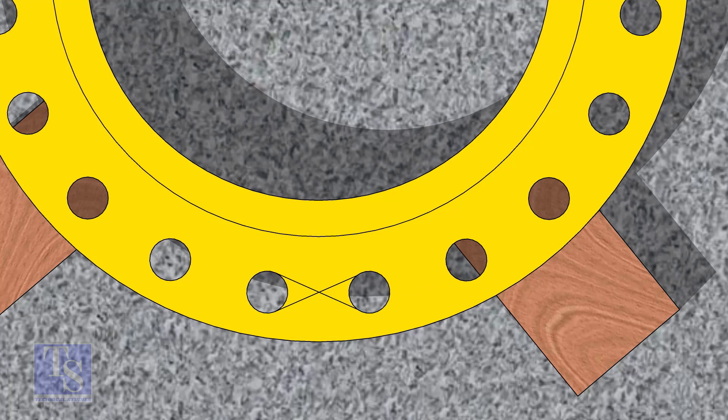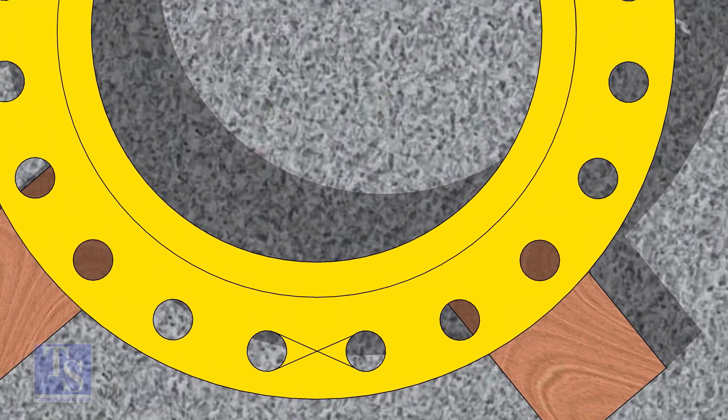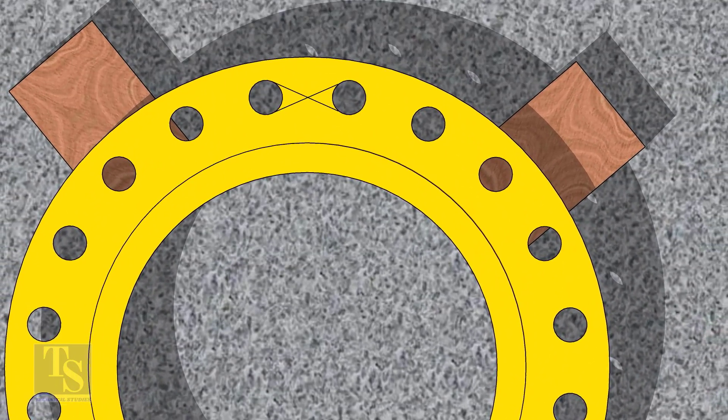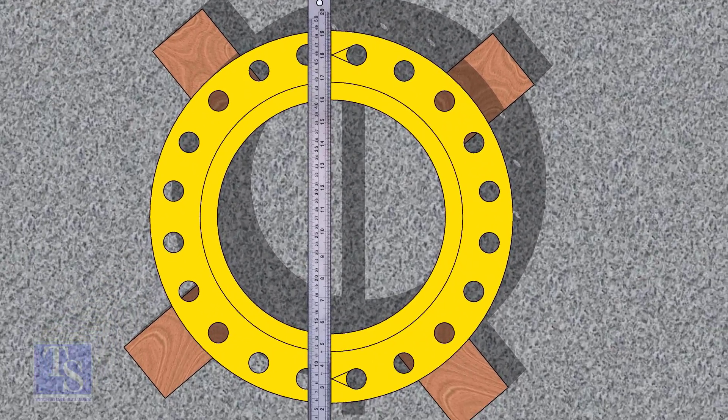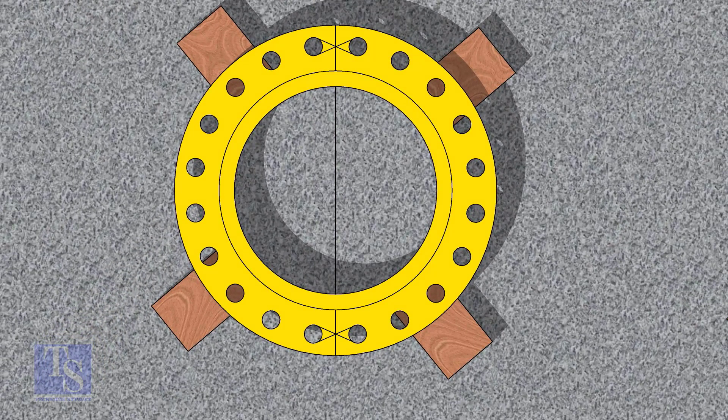Draw the center of the two holes on the opposite side. Draw the center line of the flange as shown.